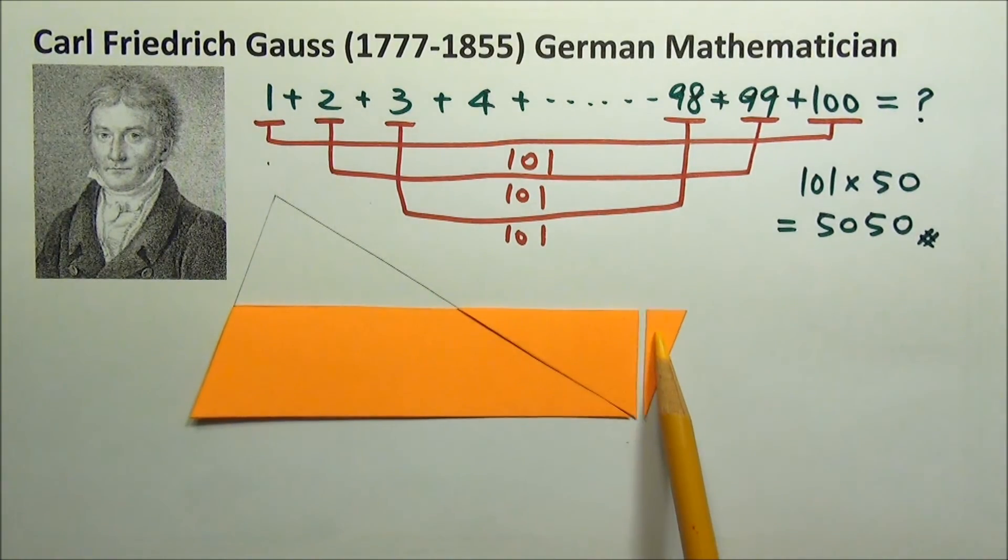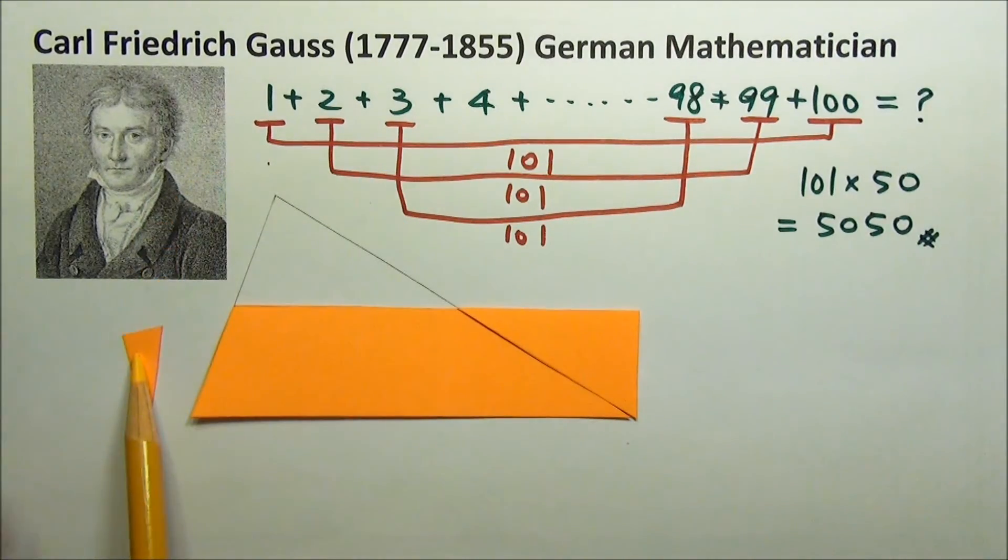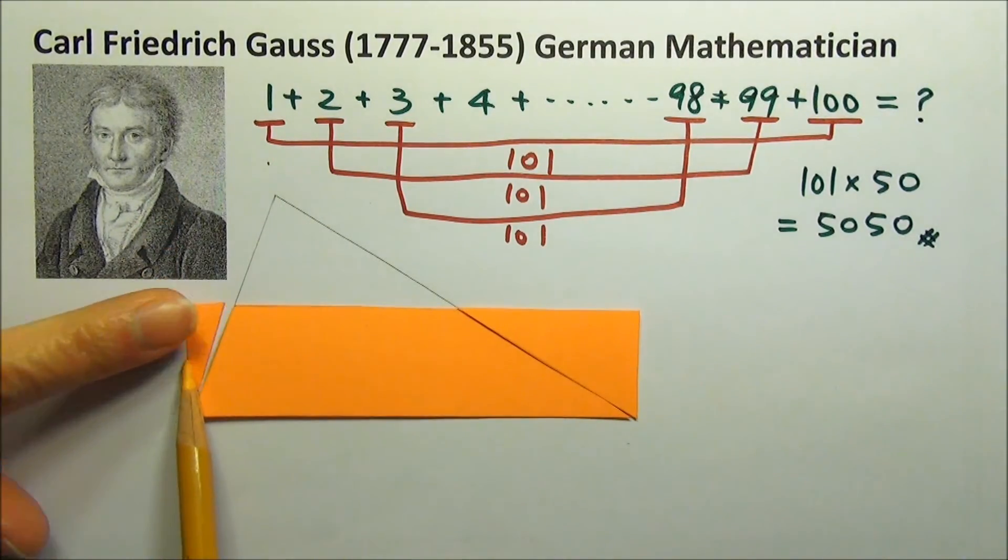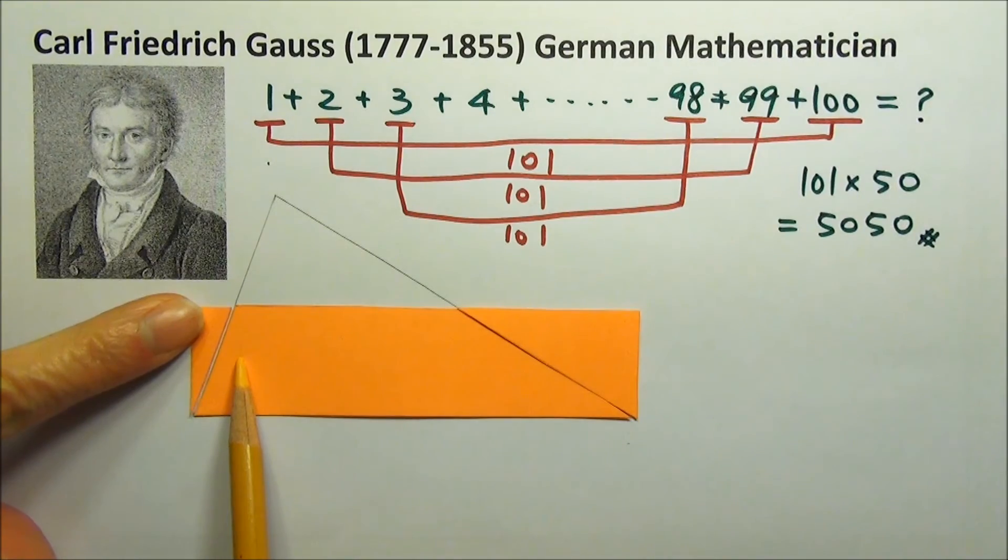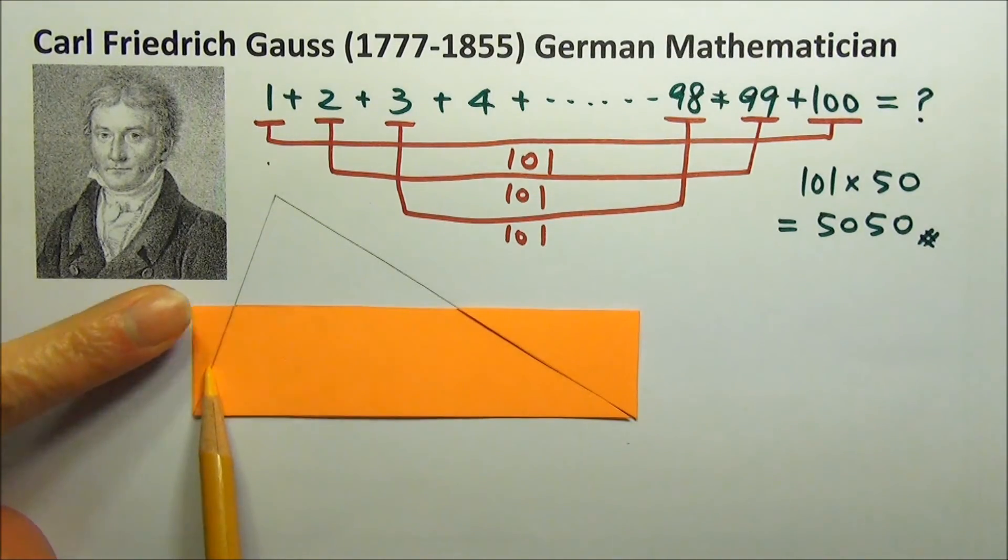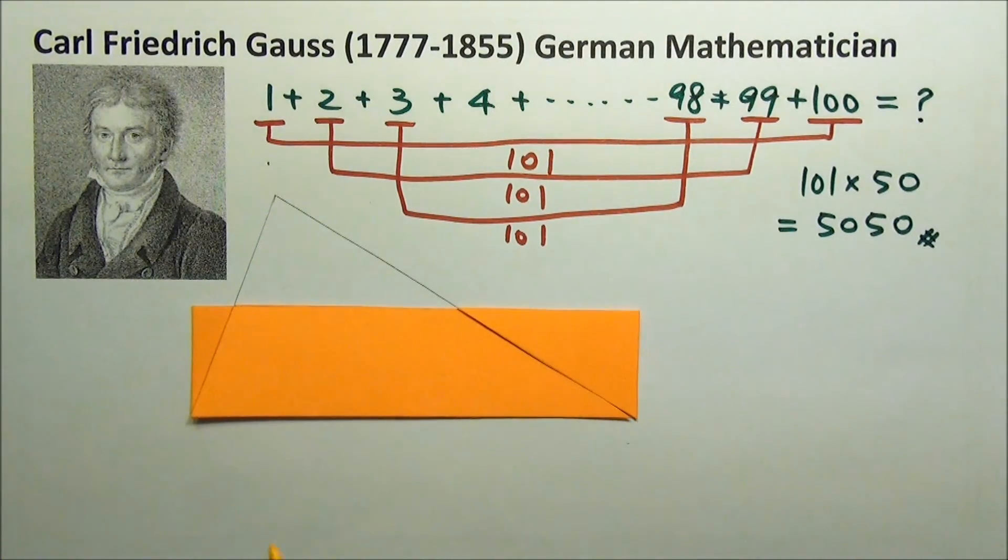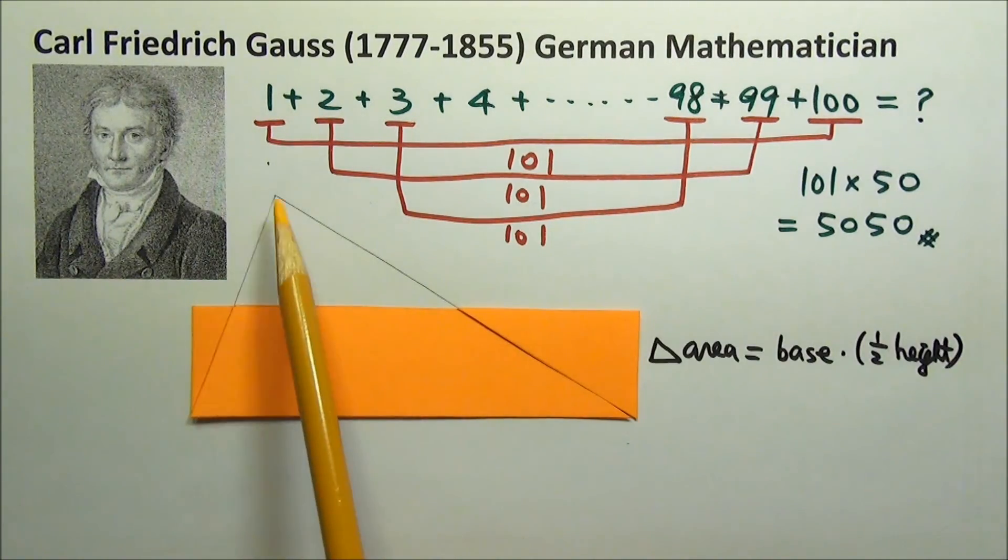And then we can cut this off and move it to here. So we have a rectangle. And this rectangle has the same base as the original triangle and half the height of the original triangle. So the area of this triangle is the base times half of the height.